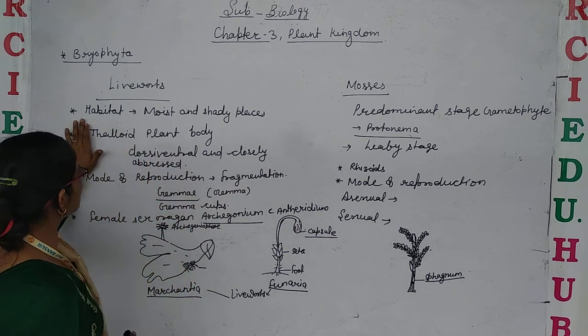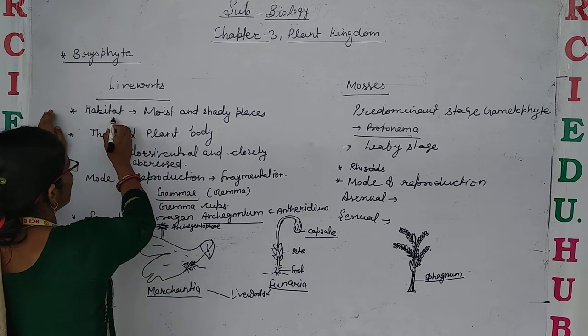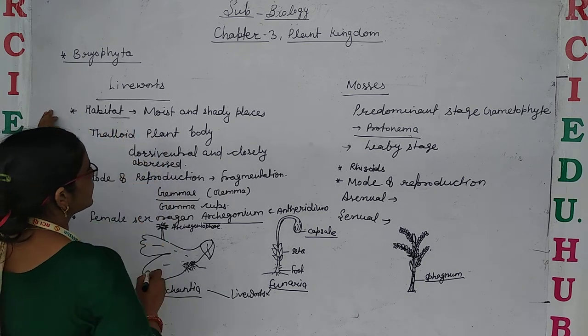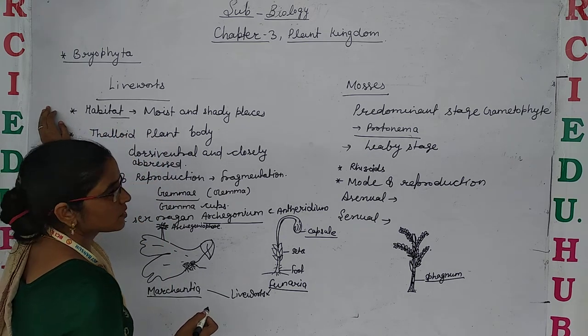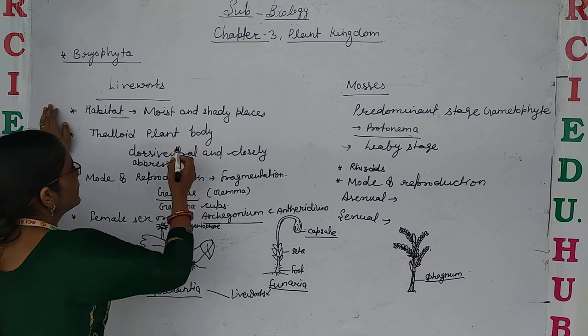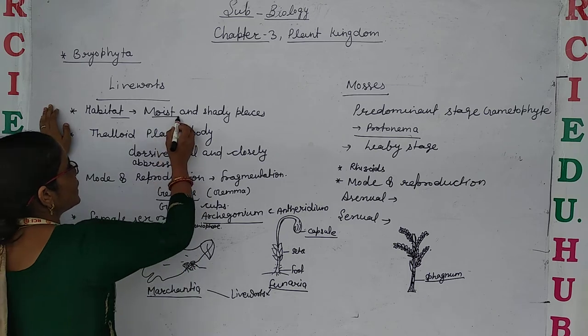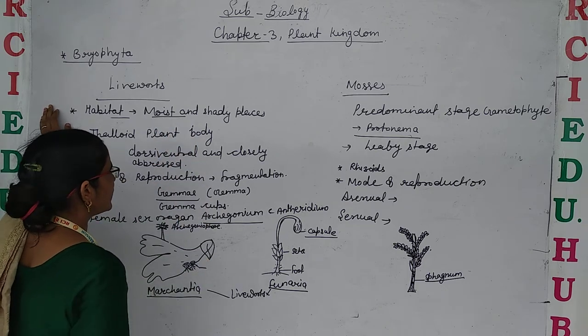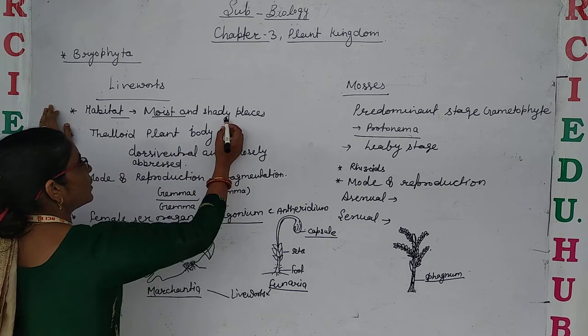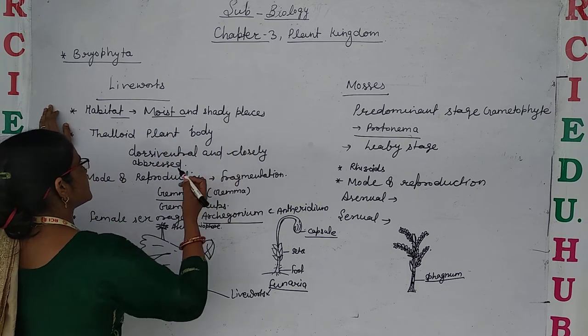Let's first discuss liverworts. They are mainly residing in the moist and shady places, on tree trunks as well as in woody areas where moisture is present.